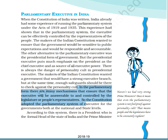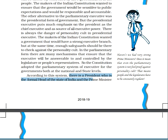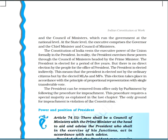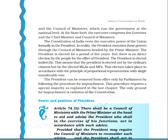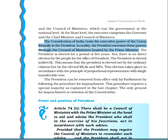According to this system, the president is the formal head of state, and the prime minister along with the council of ministers runs the government at the national level. At the state level, this executive consists of the governor, chief minister, and council of ministers. The constitution of India vests executive powers of the union formally in the president.